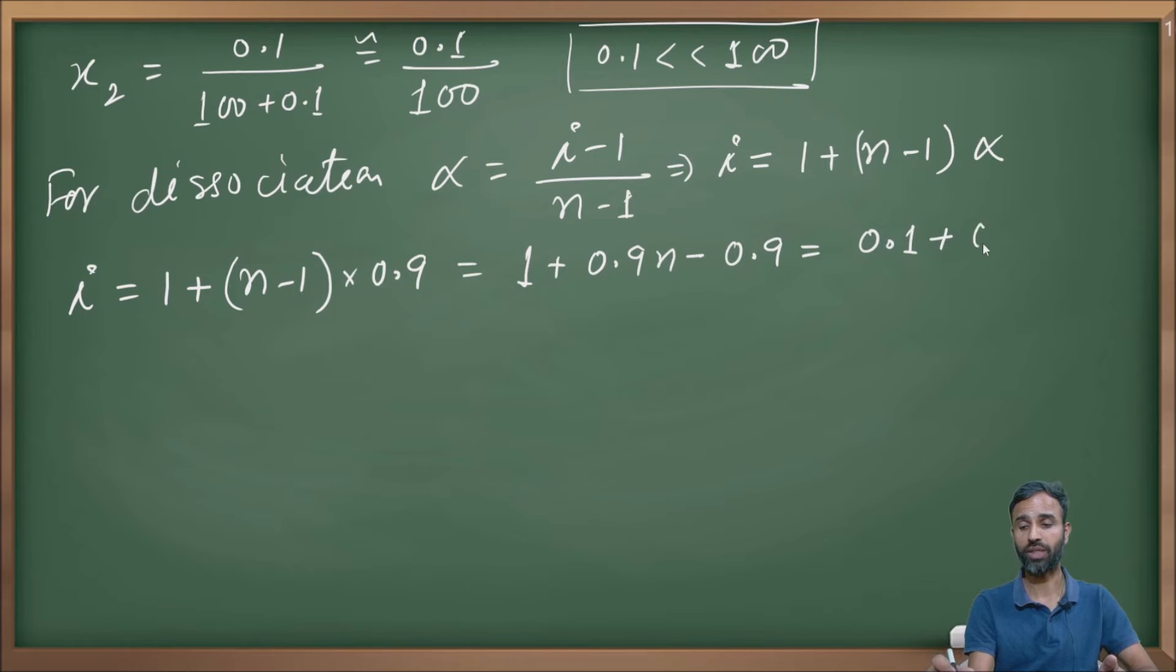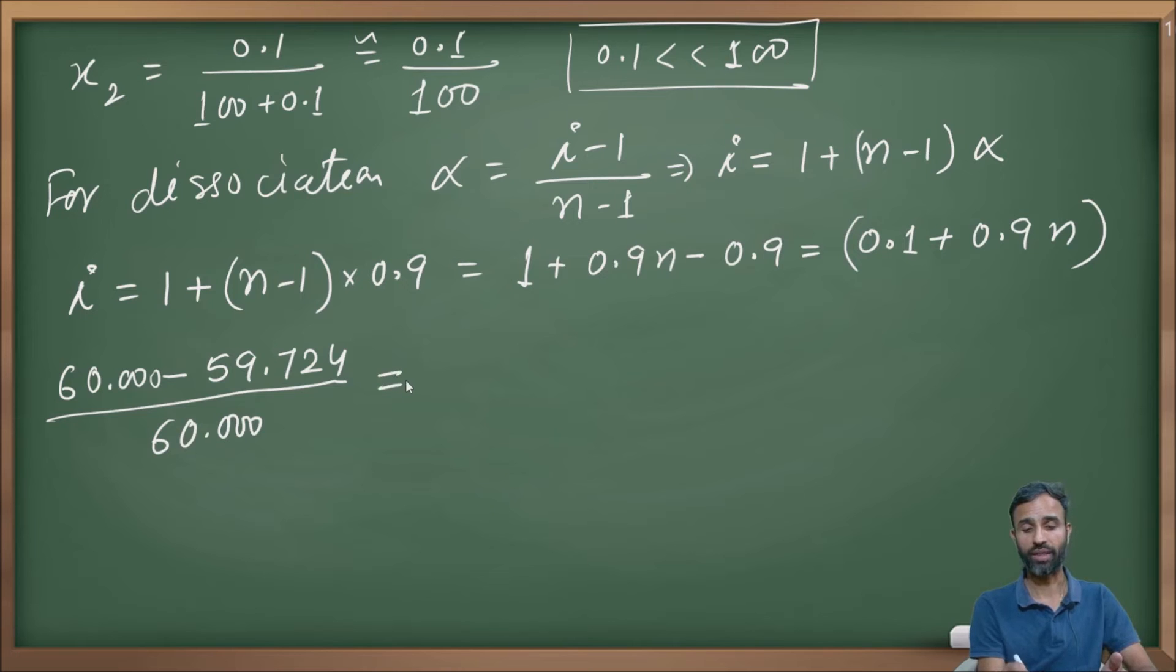Now, (60 - 59.724)/60.000 = (0.1 + 0.9n) × (0.1/100). So 0.276/60 = (0.1 + 0.9n) × 0.1/100.